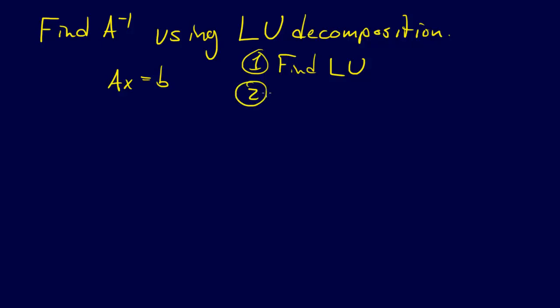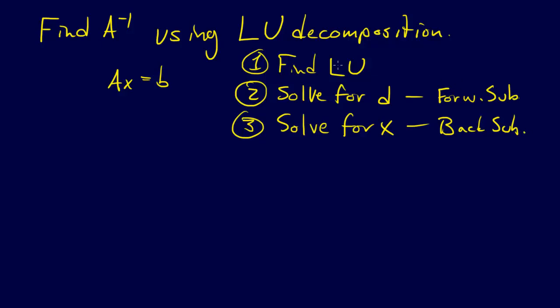Step two, solve for D. Step three, solve for X. And these two were relatively easy. They were just, this was forward substitution, and this was back substitution.